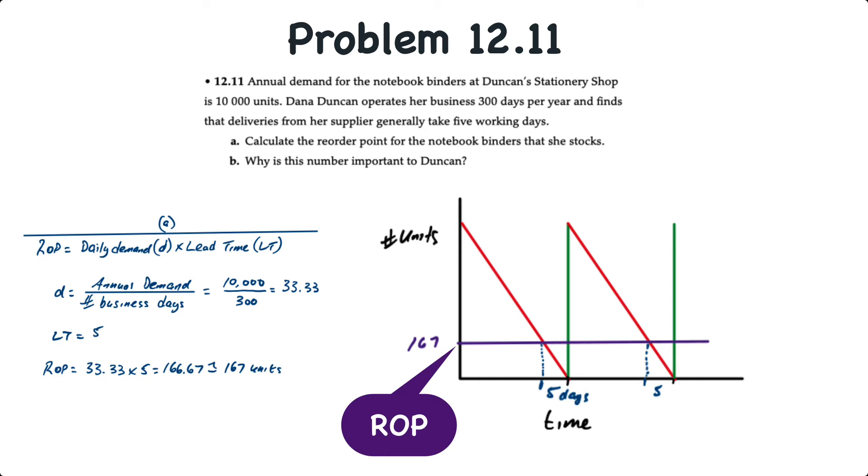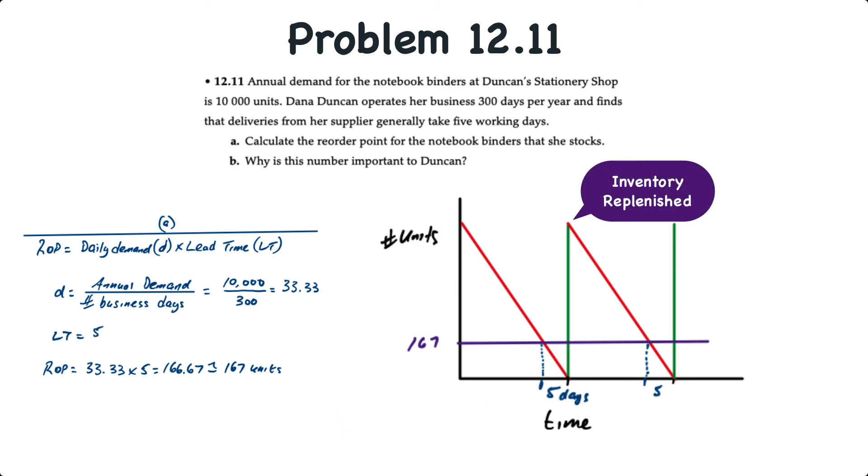With our reorder point set to 167 units, the inventory system will trigger a reorder once inventory reaches that level and customers will continue to purchase the notebooks over the next five days, which is when the next shipment of the economic order quantity will arrive and the green line then replenishes the entire inventory back to the economic order quantity and the process repeats.